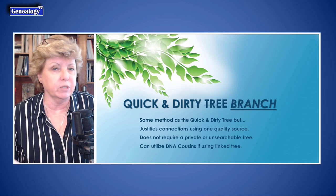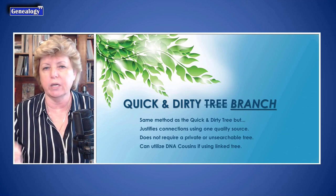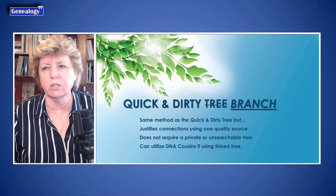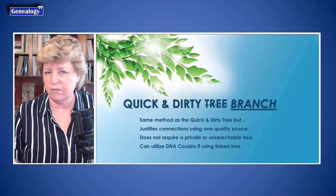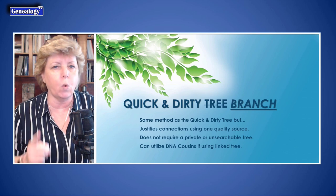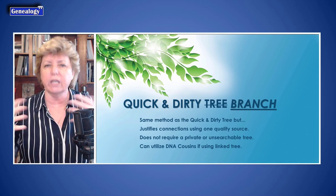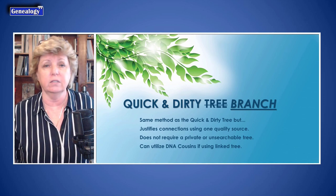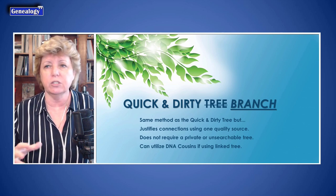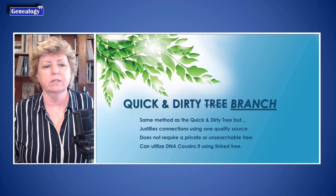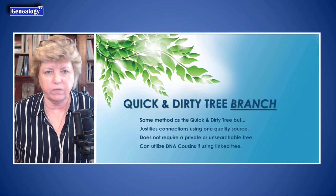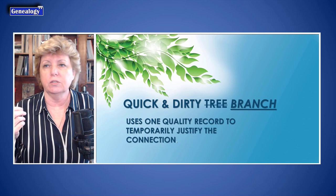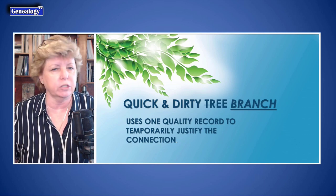I am doing a spinoff of that — creating this quick and dirty branch. The idea is that it uses the same method as the quick and dirty tree, but it also justifies the linkage between generations using one quality record, so that you're still working quickly but you can use it in your regular tree, even if it's public. It can also utilize DNA cousin matches, especially through lines. The quick and dirty branch uses one quality record to temporarily justify the connections.